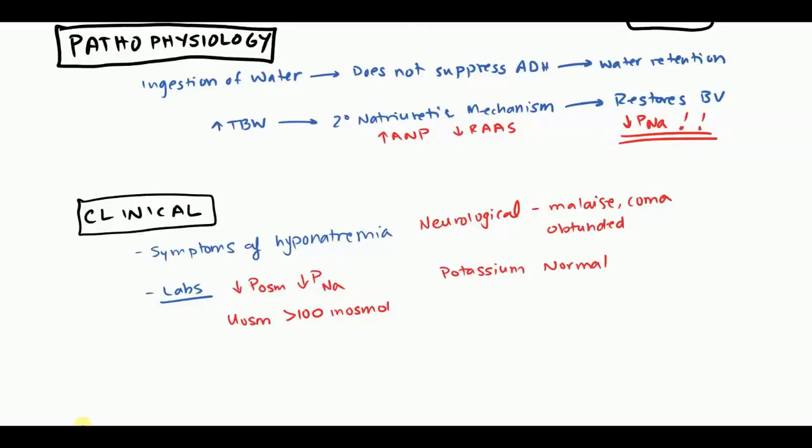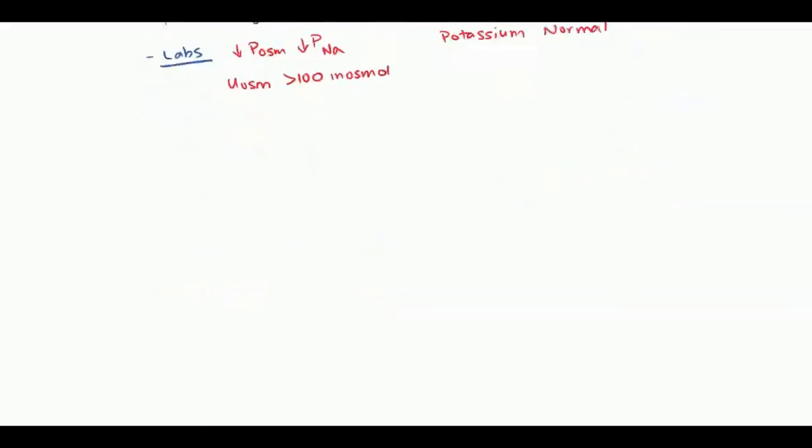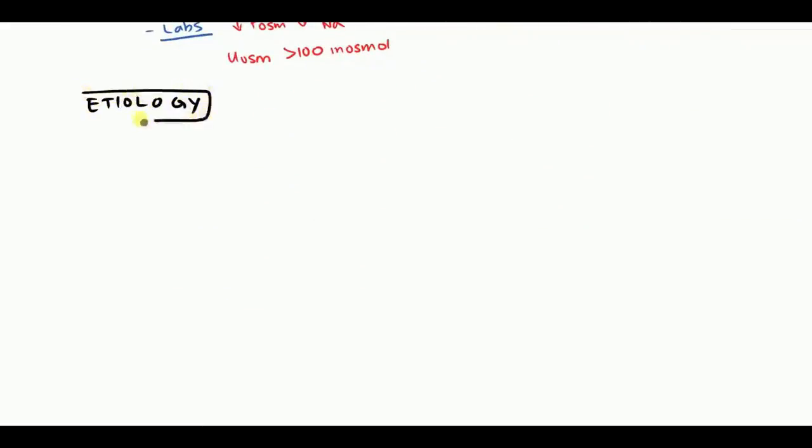Let's shift our focus to the etiology of syndrome of inappropriate ADH. The first one is CNS. Pretty much the way you want to think about it is anything that affects the CNS can give you SIADH. This could be a stroke, it could be due to hemorrhage, infections such as meningitis or encephalitis, or any trauma to the head.